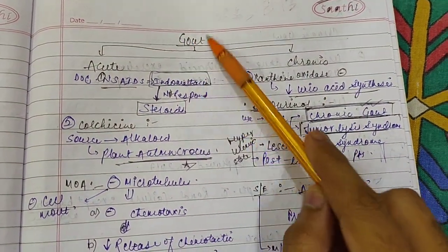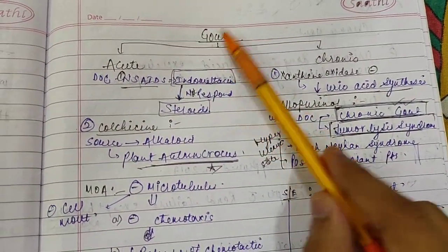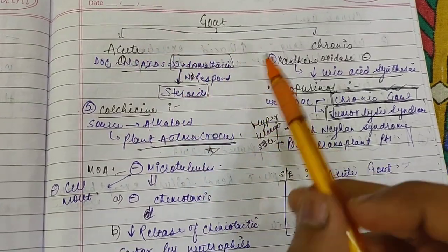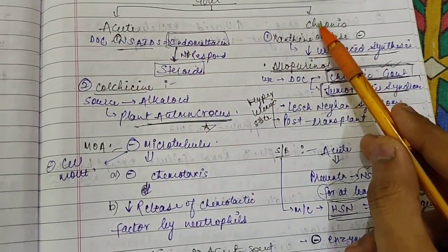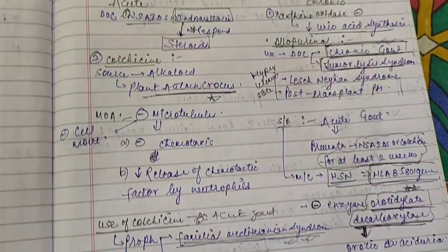Hello friends, in this video we're going to discuss the pharmacology of gout. For acute gout we use two drugs: NSAIDs and colchicine. For chronic gout we use xanthine oxidase inhibitors and many more.